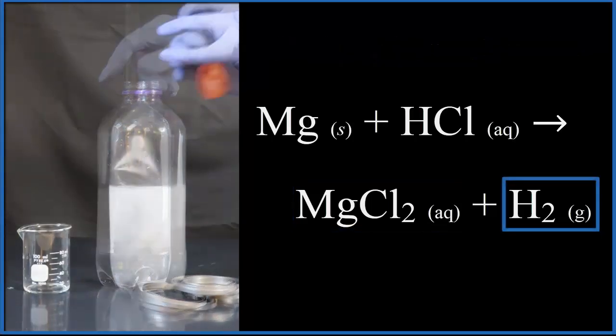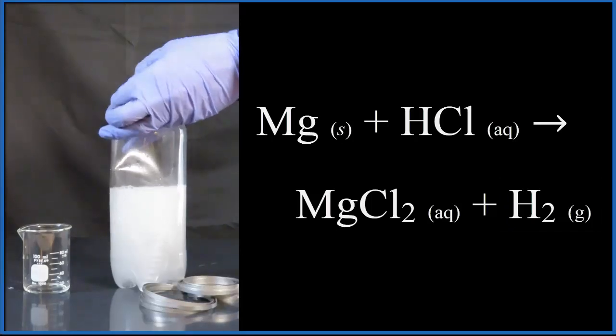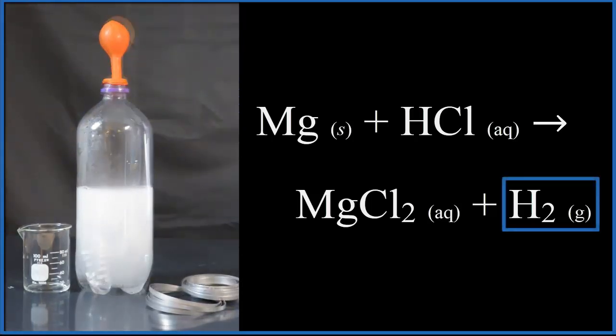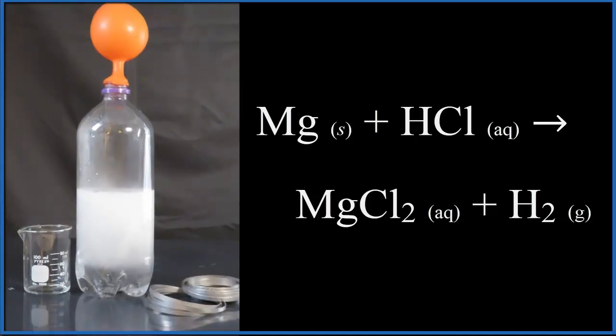We can collect the gas in a balloon placed over the bottle. As the reaction takes place, that balloon is filling up with that hydrogen gas as the pressure builds and the balloon collects more of the gas. Let's speed this up just a little bit, and we can take that gas and light it on fire. If it's hydrogen, it'll make a nice explosion.